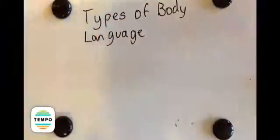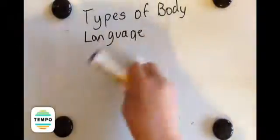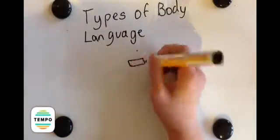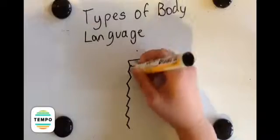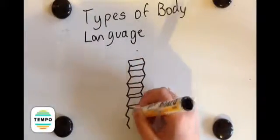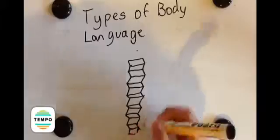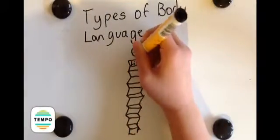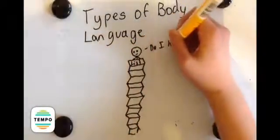Types of body language include facial expression, body posture, gestures, handshakes, eye movement, physical contact, tone of voice—which is technically a combination of spoken language and body language—and also other types of physical movement.